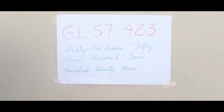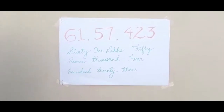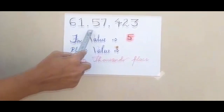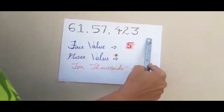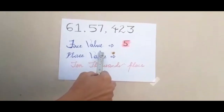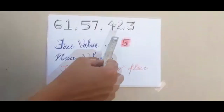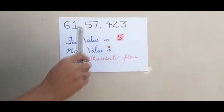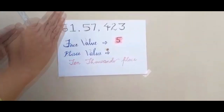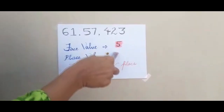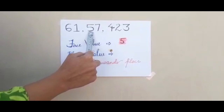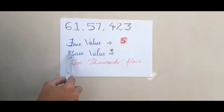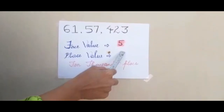Now let's move on to place value and face value. The same number, sixty-one lakh fifty-seven thousand four hundred and twenty-three, is given. First, understand what face value means. Face value means the digit itself. For any number you are given, the face value of a digit is simply that digit — for example, the face value of five here is five.